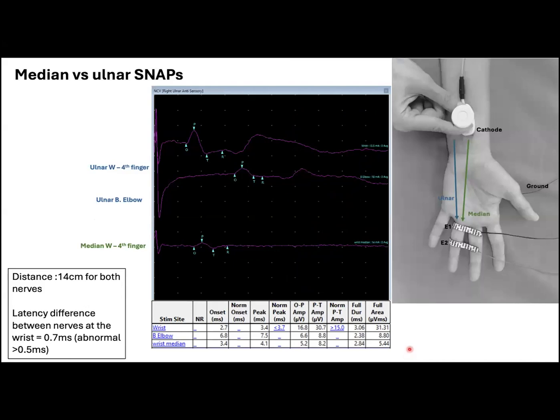Here we have another example of antidromic snaps with motor artifacts that can happen even with low-intensity stimulations. This recording is from the ring finger, while stimulating both the ulnar nerve at the wrist and elbow and the median nerve at the wrist in the same patient.